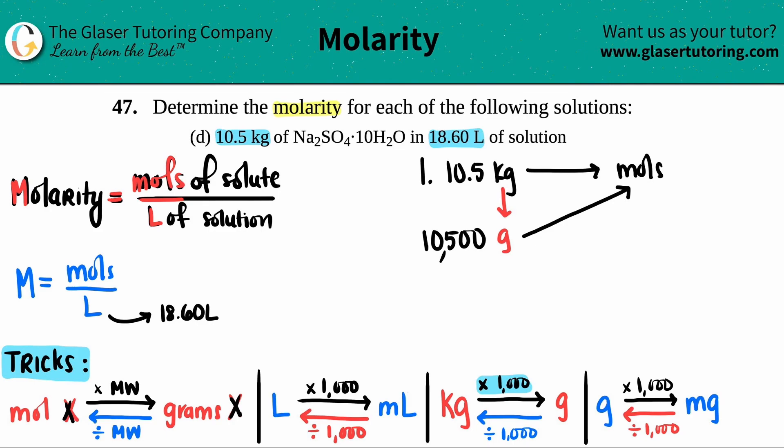It just has to be the same element or compound. So in this case, this is 10,500 grams of Na₂SO₄·10H₂O. So when I find the moles, it's going to be of the same compound, Na₂SO₄·10H₂O.